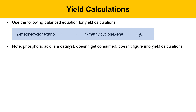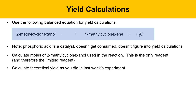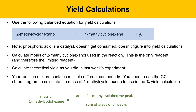Calculate the moles of 2-methylcyclohexanol used — it's the only reagent and therefore the limiting reagent. Calculate the theoretical yield as in last week's experiment. Your reaction mixture will contain multiple compounds, so use the GC chromatogram to calculate the mass of 1-methylcyclohexene produced. The distillate is not pure 1-methylcyclohexene; it's a mixture. To find the actual yield, multiply the fraction of the 1-methylcyclohexene peak area over the sum of all peak areas (excluding acetone) by the mass of the crude product mixture.